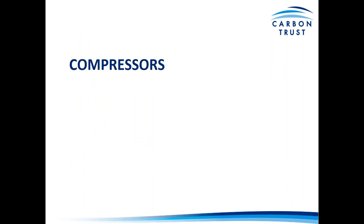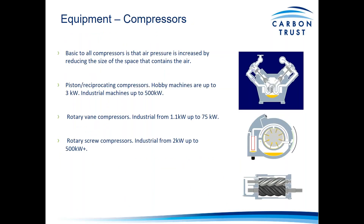Looking at the main component — the compressors. All a compressor does is pressurize the air. The main types, for the smaller ones — although they can range up to half a megawatt — would be the piston and reciprocating compressors, which you'd often hear in garage workshops. There's also the rotary vane, typically for industrial use from one up to 75 kilowatts. And then you've got your rotary compressors, which would typically be going up to the larger machines.